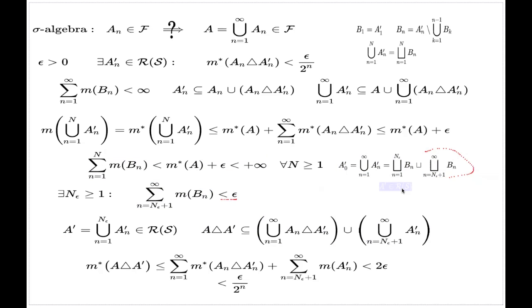If you remember I call the first part in this union A dash, and that's the element of my minimal ring. This one I will call A double dash, and we know that the measure of this is less than epsilon.